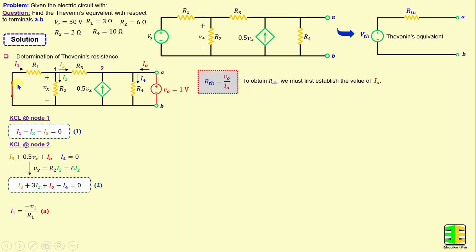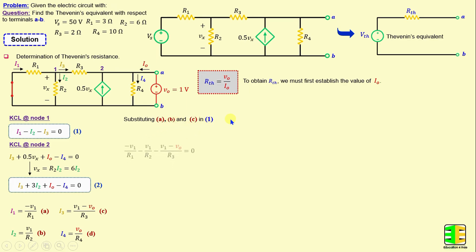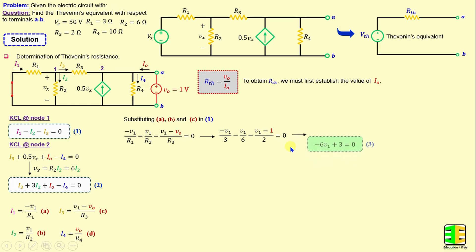According to Ohm's law, I1 equals negative V1 over R1, where V1 is the voltage at node 1. I2 equals V1 over R2, I3 equals V1 minus V0 over R3, and I4 equals V0 over R4. Now by substituting A, B, and C into equation 1, we can write: negative V1 over R1 minus V1 over R2 minus (V1 minus V0) over R3 equals 0. Replacing the resistors and V0 with their numerical values and simplifying, we obtain: negative 6 times V1 plus 3 equals 0.